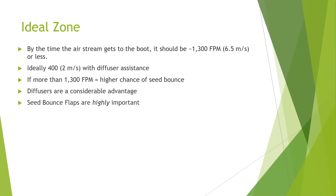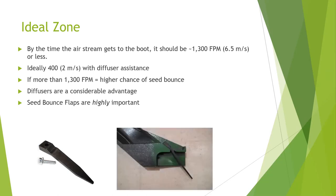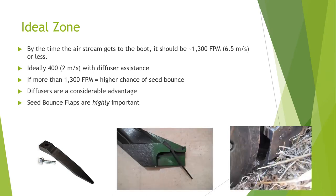Seed bounce flaps are also highly important. See Exapta's Ninja Flaps for John Deere 50 and 90 series no-till drills, designed with a 20-degree bend downward and made with very durable and flexible material so the tab will flex back to its original position. This 20-degree bend eliminates the gap that all other flaps leave for seed to escape. The long wear life is phenomenal — this is our number one seller of all our products.